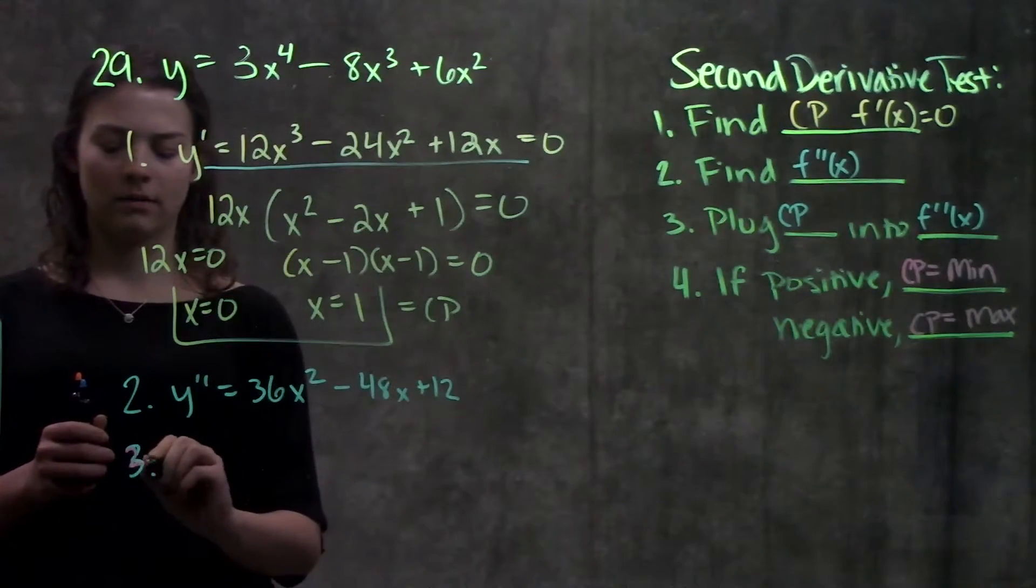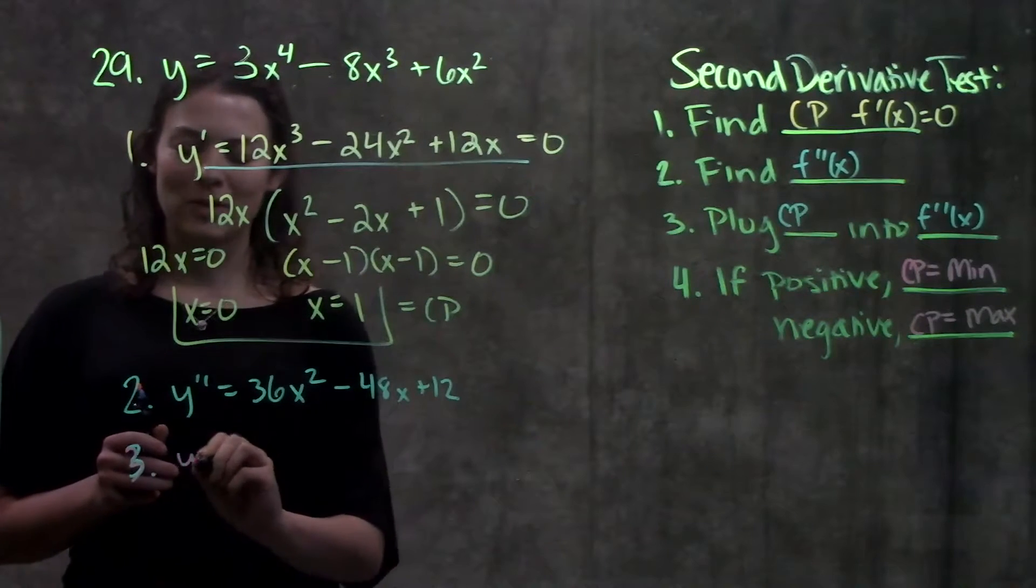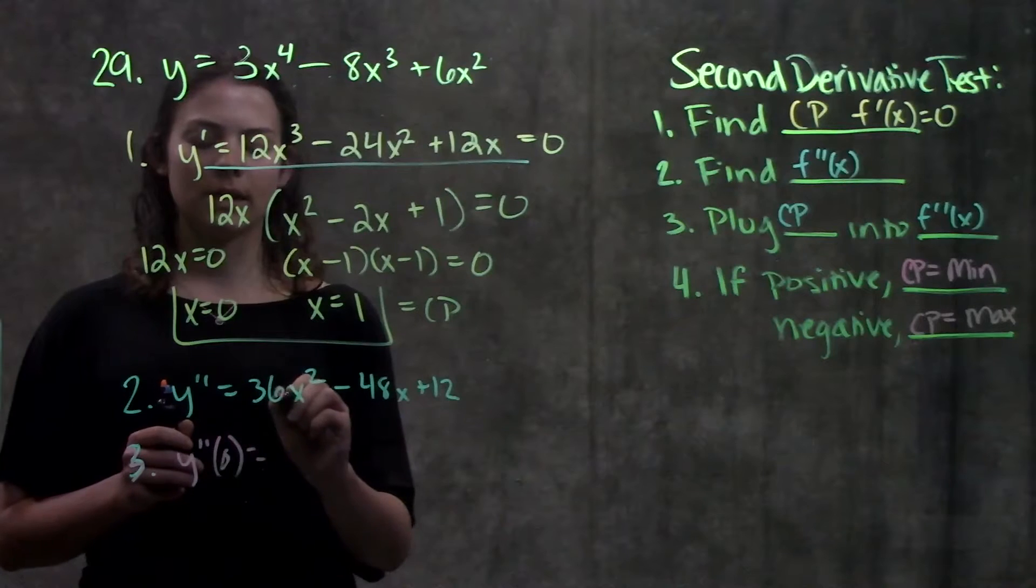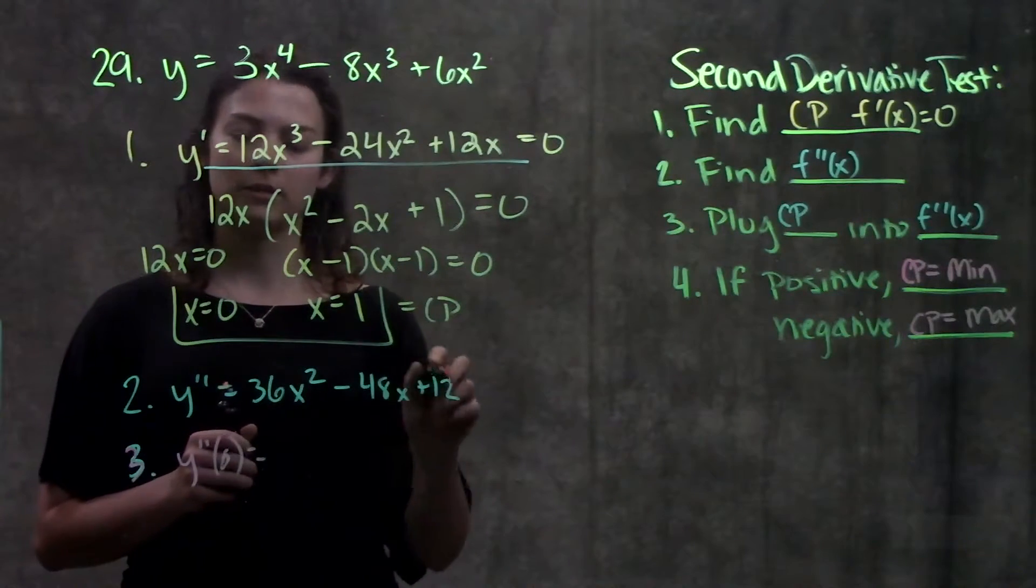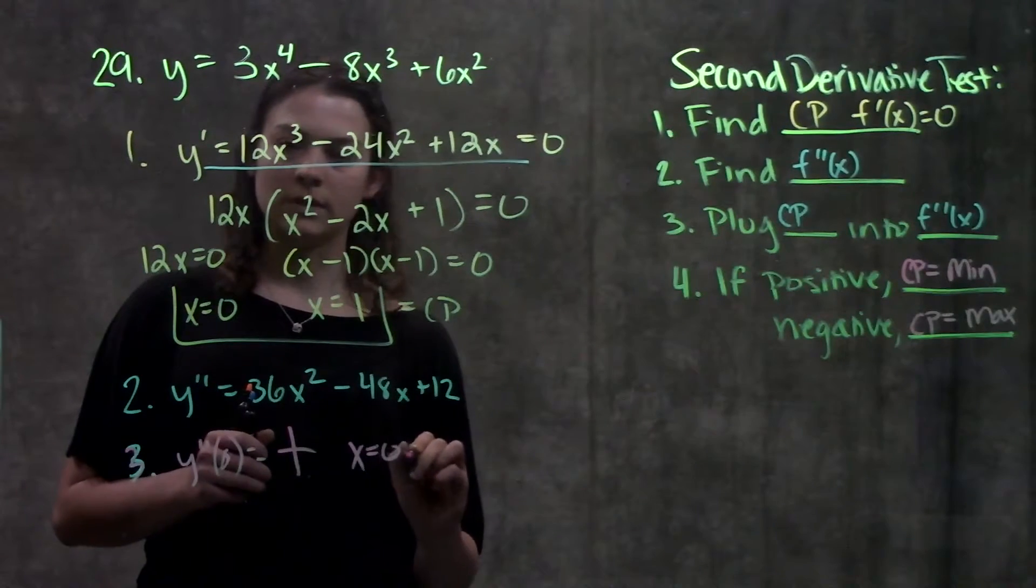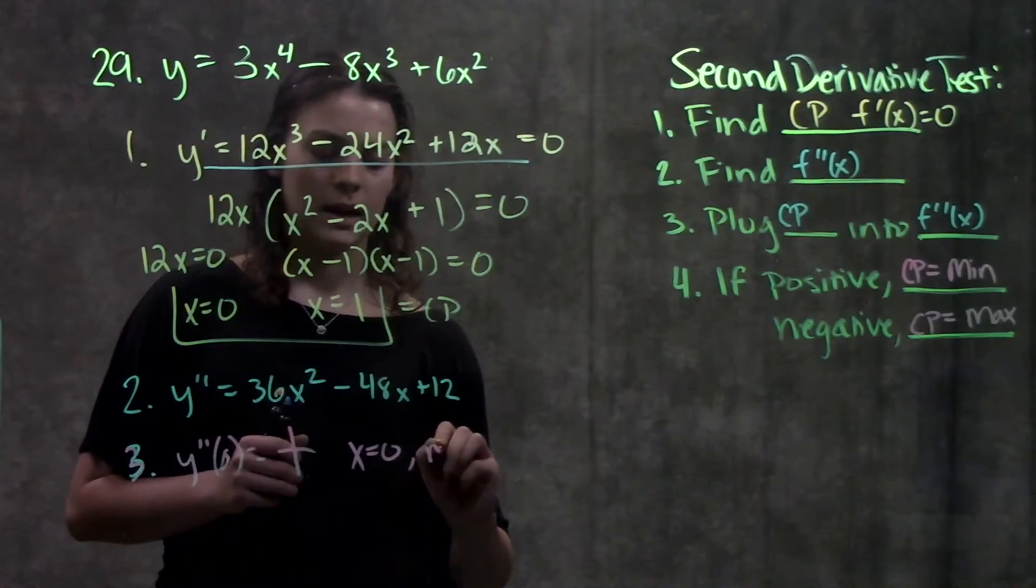So let's change colors here. So we plug in our first critical point, which is zero. And when we plug zero into our second derivative, we get zero minus zero plus 12. That gives us a positive value. That means that x equals zero, according to our chart, is a minimum.